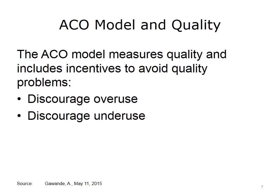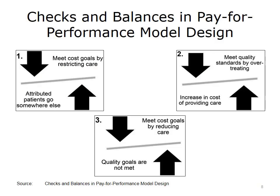Underuse was one of the key problems with the HMO model in the 1990s. Financial incentives encouraged denial of necessary care as well as unnecessary or low-value care. By including quality measures as a condition, the ACO model creates a different set of incentives. Let's look at the checks and balances built into the ACO model. The figure shown here illustrates how the three competing elements of quality, cost, and health care experience provide these checks and balances. In the first image, ACOs could exert downward pressure by attempting to meet cost goals by restricting care to individuals.